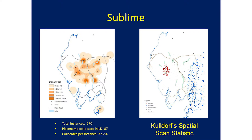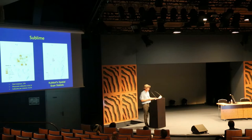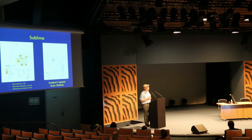One more: 'sublime'. Again, quite a different pattern — a much more dispersed pattern around the map. Keswick perhaps again, but this time we're finding quite a lot of 'sublime' over in the western fells and various other places. With the scan statistic, the hot spot this time appears to be very much in the western fells — exactly where 'beautiful' wasn't found, where 'beautiful' was actually a cold spot.